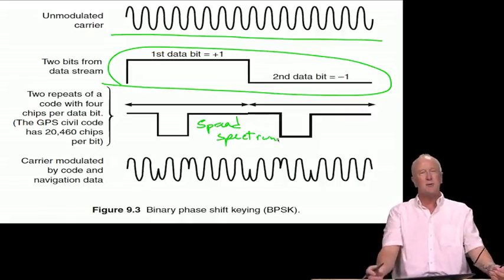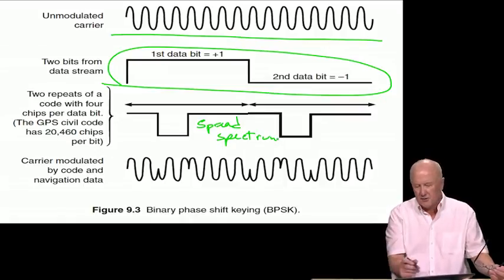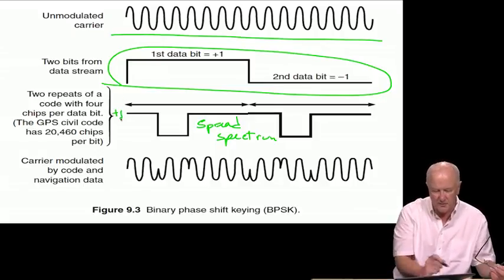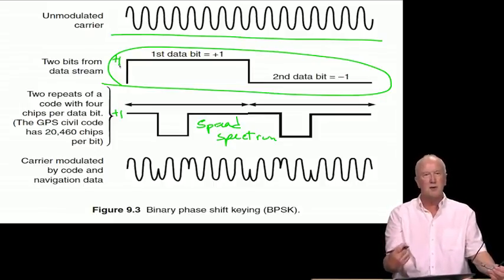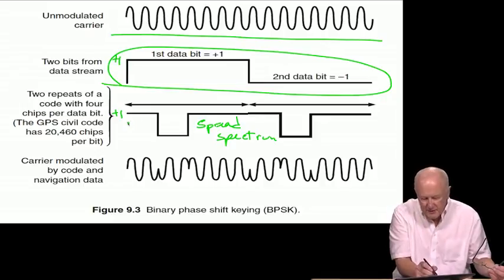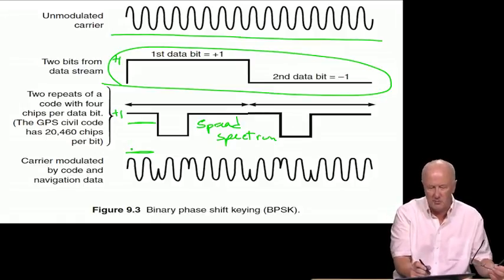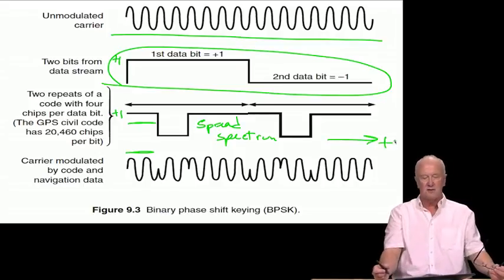And they, too, flip the polarity of the carrier back and forth. So you can think about it by looking at the plus one from the code here, the plus one from the data here. Plus one times plus one is one. And so this little chunk of the carrier passes through without a polarity change. However, as we move forward in time, and time is going in this direction on all four of these plots, we noticed that the carrier has switched to a minus one.